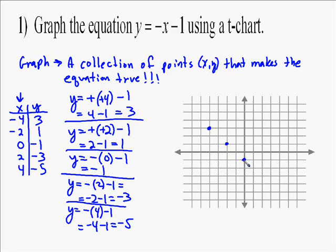Let's plot those points. Negative 4 over, 3 up. Negative 2 over, 1 up. 0, negative 1 - that's actually called the y-intercept. 2 over, negative 3 down, and then 4, negative 5. As you can see, they make a nice straight line.